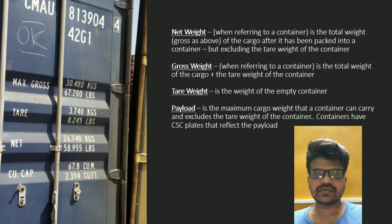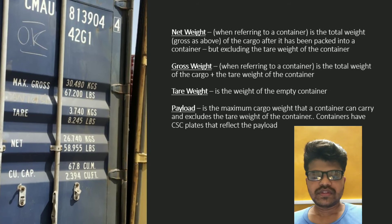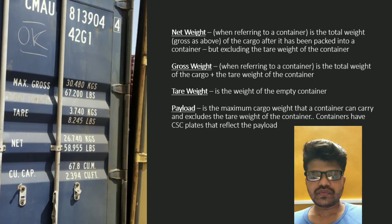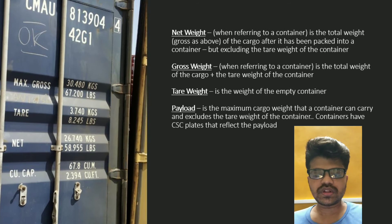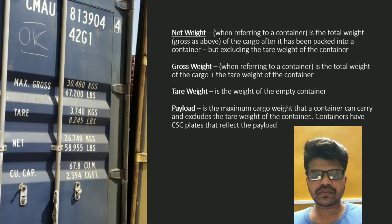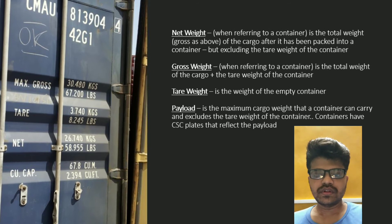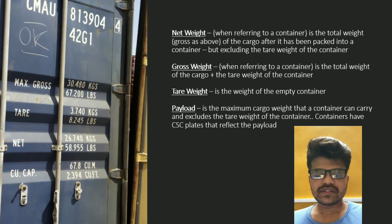Now, what is the gross weight? The gross weight, when referring to a container, is the total weight of the cargo plus the tare weight of the container. That is the gross weight of the container.